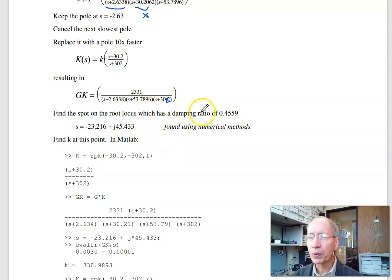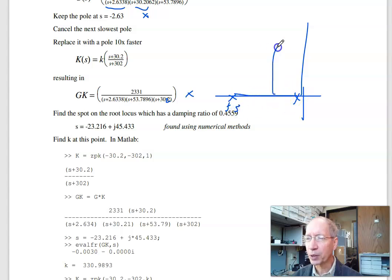Draw the new root locus. Find the spot on the new root locus. There's minus 2, minus 53, minus 302. These come together, split apart. Find the point on the root locus that has a damping ratio of 0.4559. Solution is minus 23 plus j45.